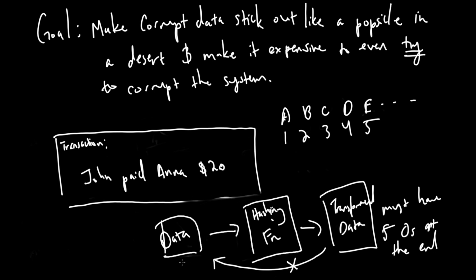So we have what I'll call a test key, or input — it could be called a nonce in official jargon. This is basically where you can put whatever you want alongside the data in order to get a transformed output that follows the required structure. In this setup, we have a rule: when I apply the hashing function, the transformed data must have five zeros at the end. You keep trying different test keys until the transformed data has five zeros at the end.